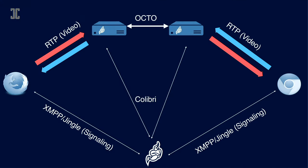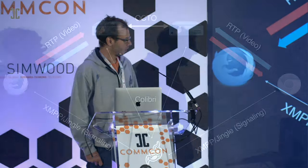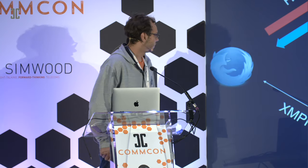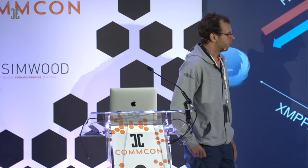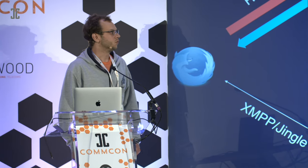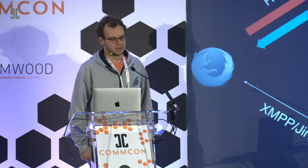We did not need to do any shared state between the SFUs because we already have the central entity. We called the system Octo. Implementing this required no changes to the clients — as far as they're aware, they're just connecting to an SFU and receive the same streams as usual. We needed to extend the Colibri protocol, the XMPP extension used to communicate between our signaling server and the SFUs.